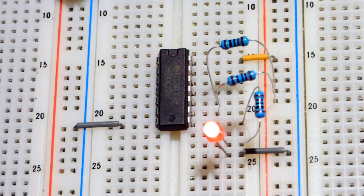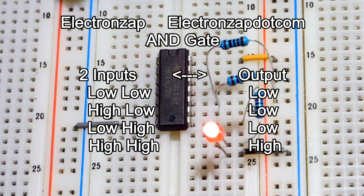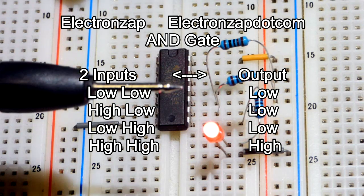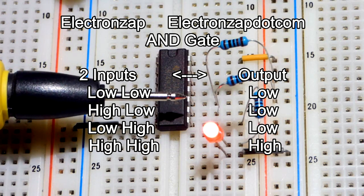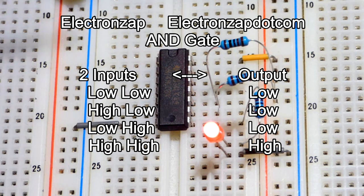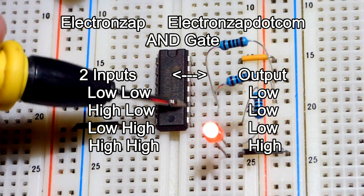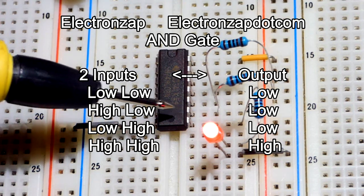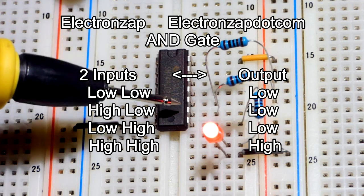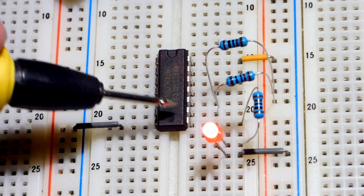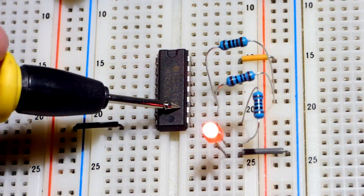So that is the AND gate. You need a positive signal at one of the pins and you need a positive signal to the other input. There's only two inputs for this particular integrated circuit. Some of them have more than two inputs, but all the ones I have have two inputs and then one output.